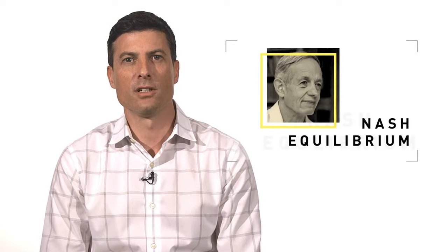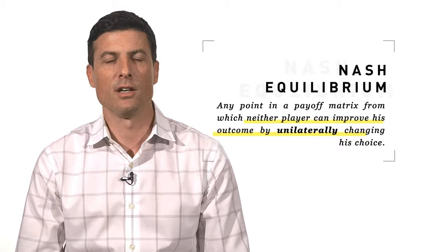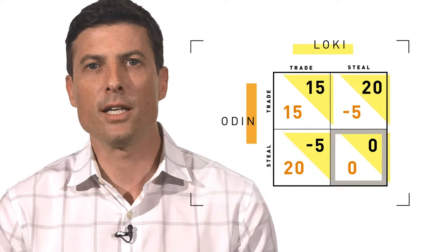One of the most important concepts in game theory is a Nash equilibrium, named after Nobel laureate John Nash. In a game of simultaneous choice, a Nash equilibrium is any point in a payoff matrix from which neither player can improve his outcome by unilaterally changing his choice. In the Odin and Loki example, the strategy of take rather than trade is an equilibrium — if both end up at 0-0, neither player would be better off changing his choice. An equilibrium is a stable outcome because changing your choice if you're at an equilibrium point would only make you worse off.